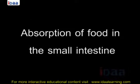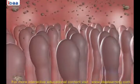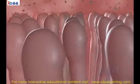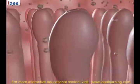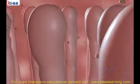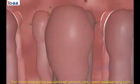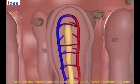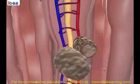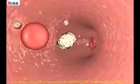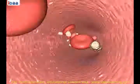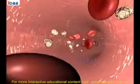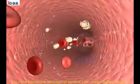Absorption of food in the small intestine. The inner wall of the small intestine has finger-like projections called villi, which have a network of thin blood vessels close to the surface. The villi increase the surface area of absorption and absorb the digested food materials. The substances absorbed are transported through the bloodstream to different organs in the body and are used to build complex substances like proteins. This process is called assimilation.